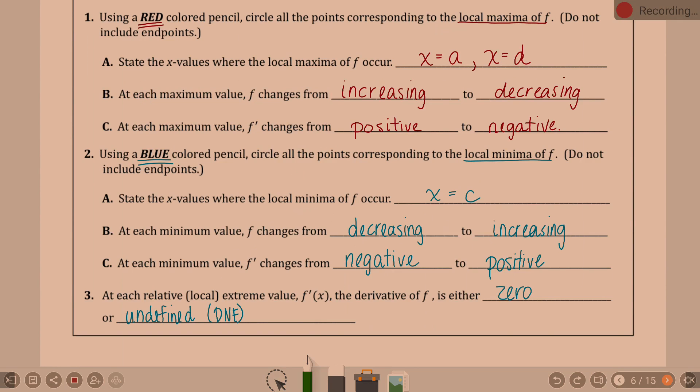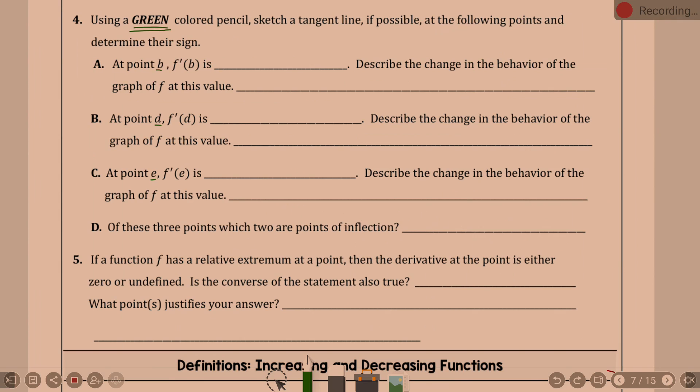Now I've got to go over to my blanks and we've got to fill these in. At point b—you might have to flip back here—at point b, f prime of b is what? Negative. The derivative, so thus the slope of the tangent line. Are you seeing this? Yes. Is negative. Describe the change in the behavior of graph of f at this value.